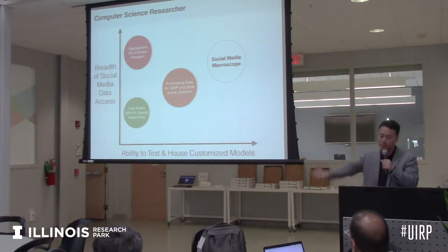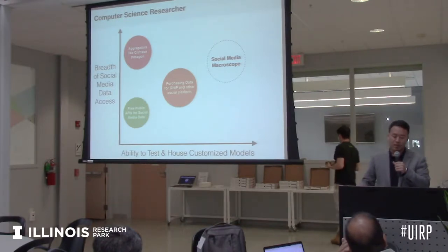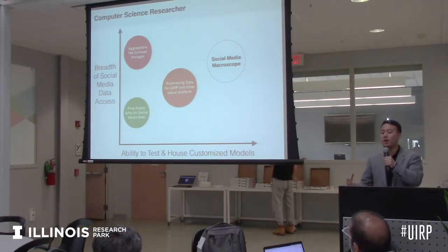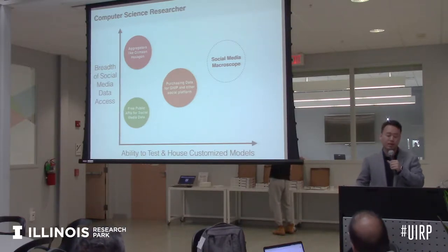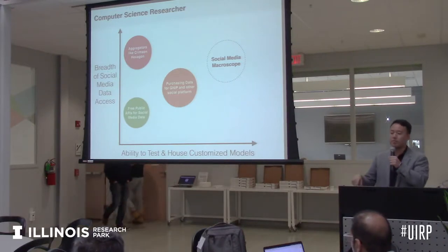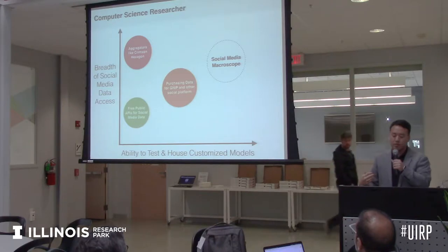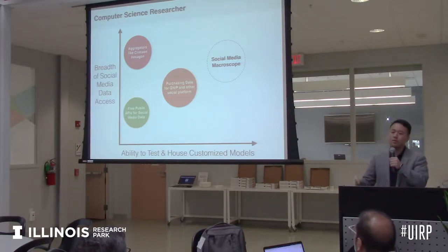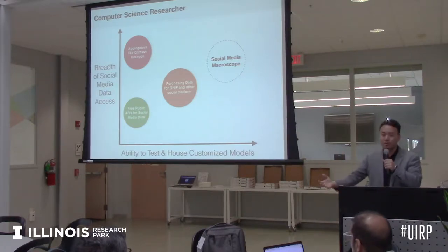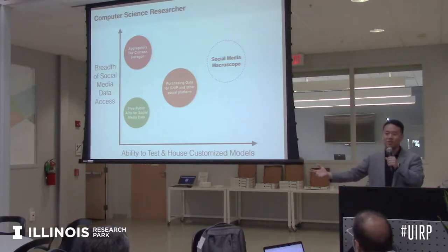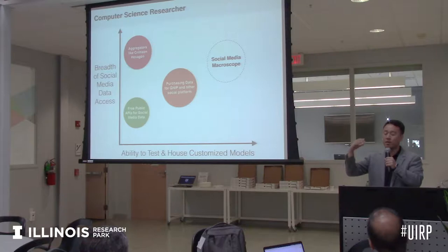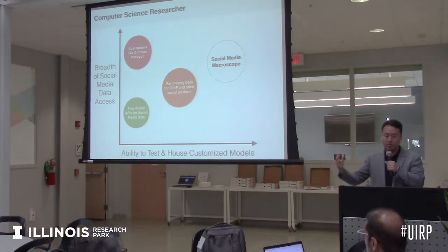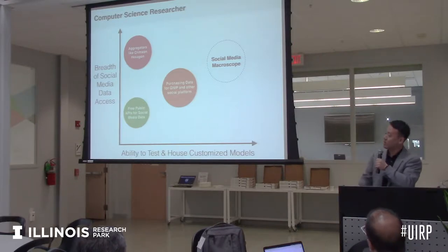How about the computer science researcher? I had to convince my CS colleagues to put their models into our environment. What are they interested in? Two important things: breadth of social media data access—it's really hard and expensive to get social media data for research nowadays. One of the carrots I presented to colleagues was: if you put your work into my environment, I'll get access to more data. But also the question of whether your model is applicable to applied social science research questions—is your model output something that can really answer a social science question well? That's where the social media macroscope fits.